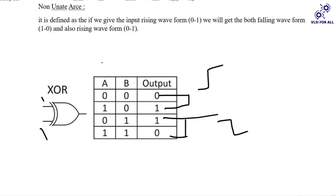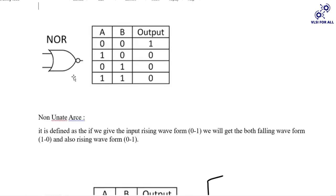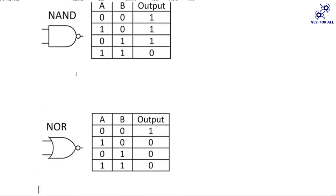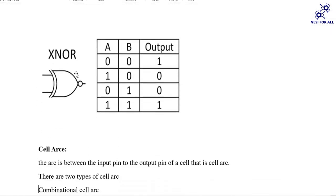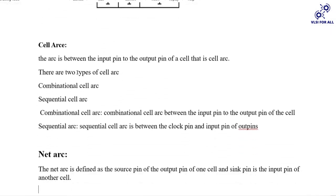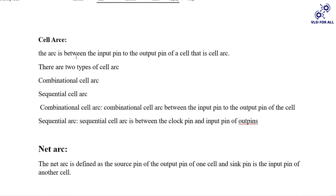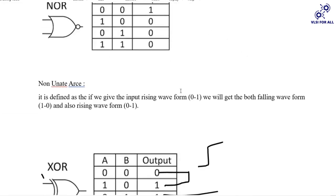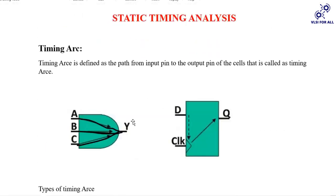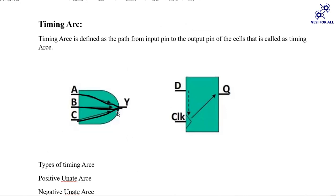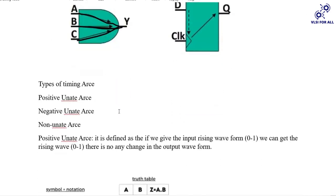So it is about the unate arc — positive unate, negative unate, and non-unate. The cell arc is defined as the path from the input pin to the output pin of a cell. That is the cell arc — this is one combinational cell arc, the path from input pin to output pin.